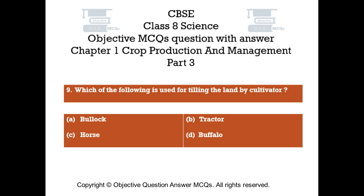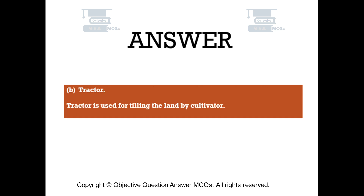Question number 9. Which of the following is used for tilling the land by cultivator? Option A: Bullock. Option B: Tractor. Option C: Horse. Option D: Buffalo. The right answer is option B — Tractor is used for tilling the land by cultivator.